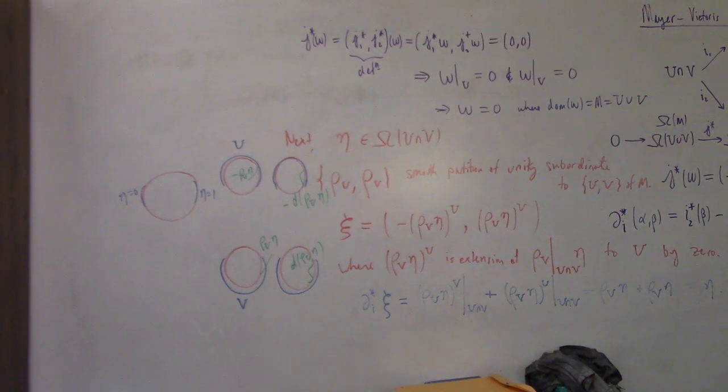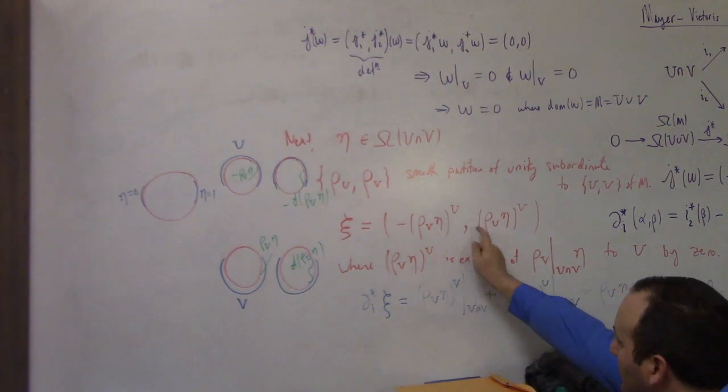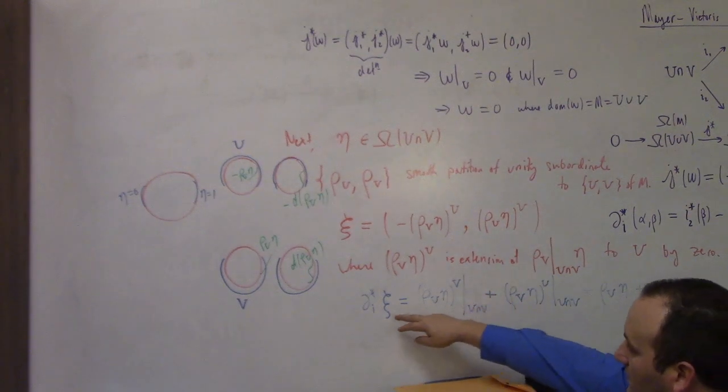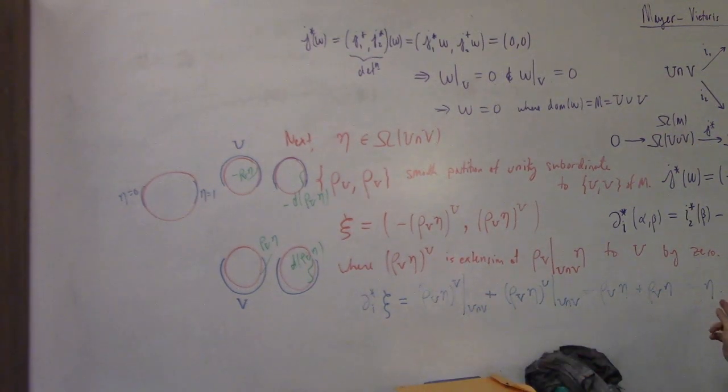Think about a point in the intersection. If we're thinking about a point in the intersection, this is just rho u eta plus rho V eta. And by definition of the partition of unity, these are scalar multiples times a form. So that shows that that is a surjection.